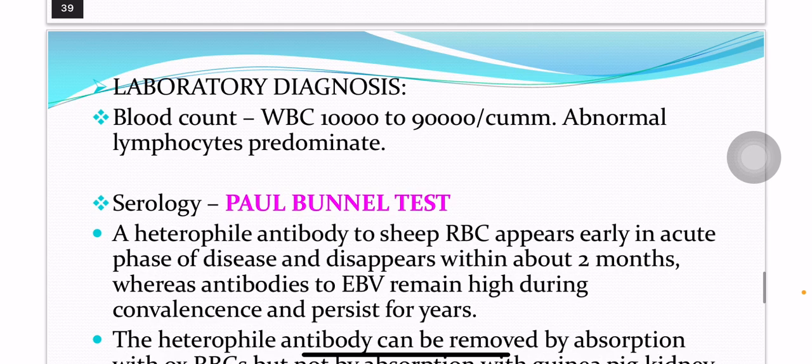Lab diagnosis: Blood count shows WBC of 10,000 to 90,000 per cubic millimeter, with abnormal lymphocytes predominating. In serology, the Paul-Bunnell test is used, which is a heterophile agglutination test.